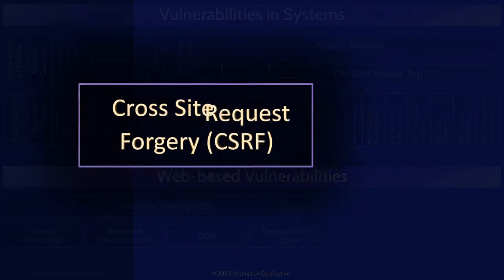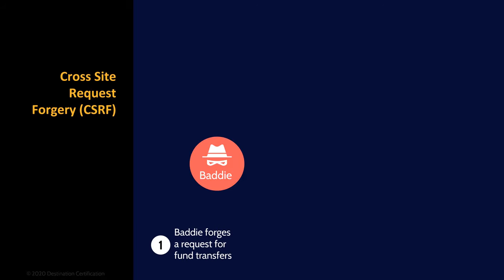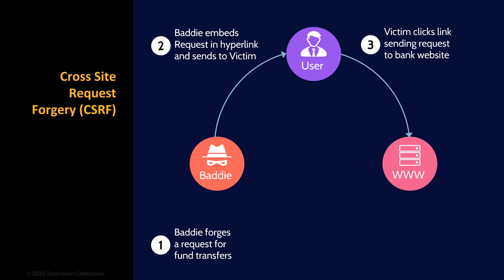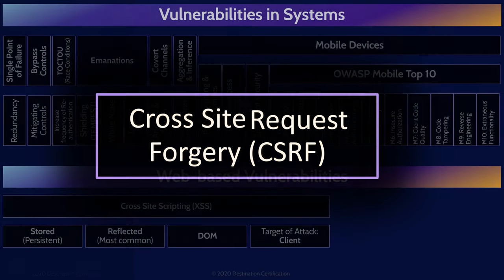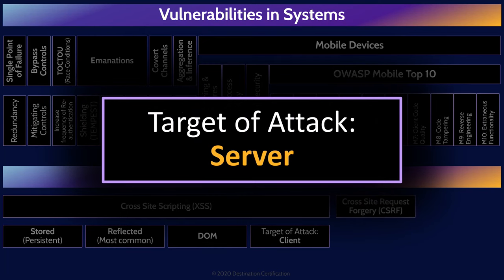The next common web-based vulnerability is cross-site request forgery. This is where an attacker forces or tricks a user into executing unwanted actions on a web application in which the user is currently authenticated, effectively allowing an attacker to execute authorized commands on a server. Who is the target of attack in cross-site request forgery? The attack passes through the user and may negatively impact the user, but ultimately the target of attack is the server. Remember that.